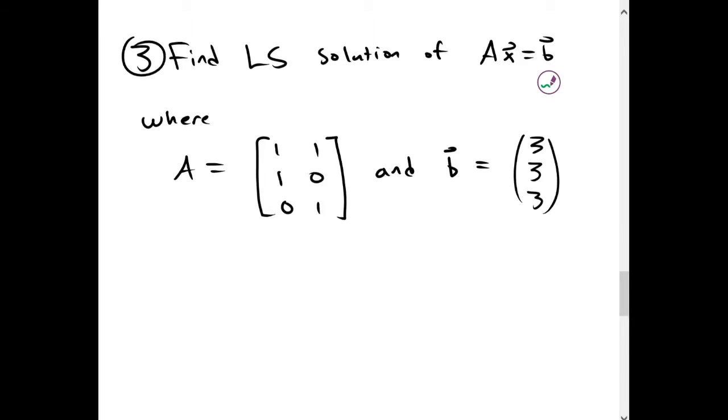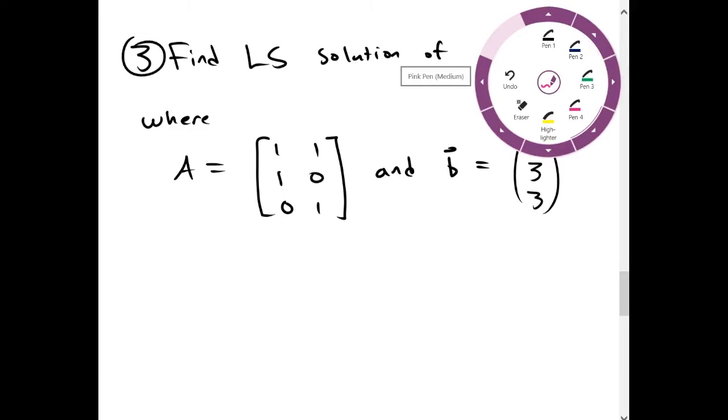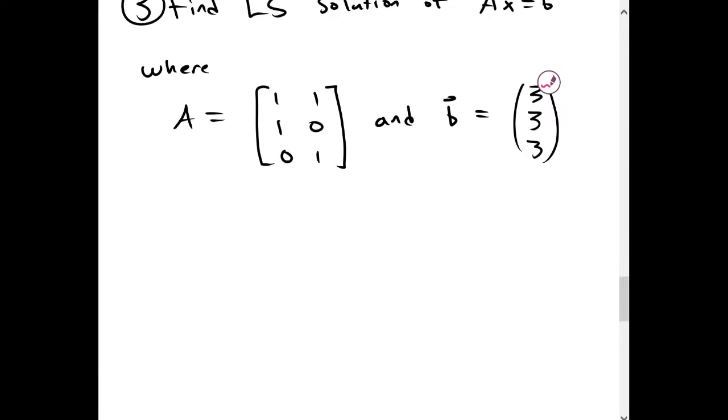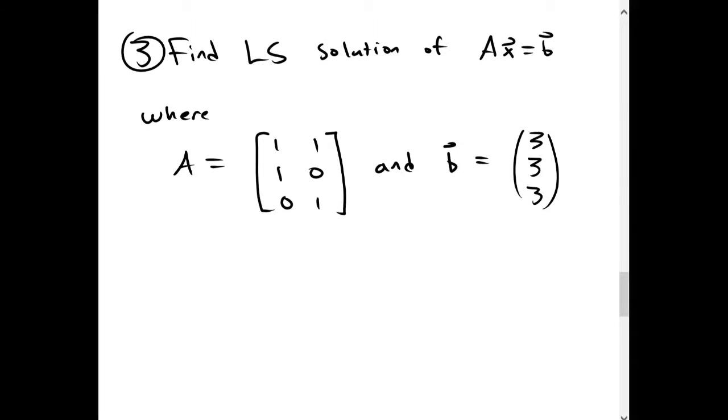For our third example, we have the same equation, but our matrix A is 1, 1, 1, 0, 0, 1. And B is 3, 3, 3.